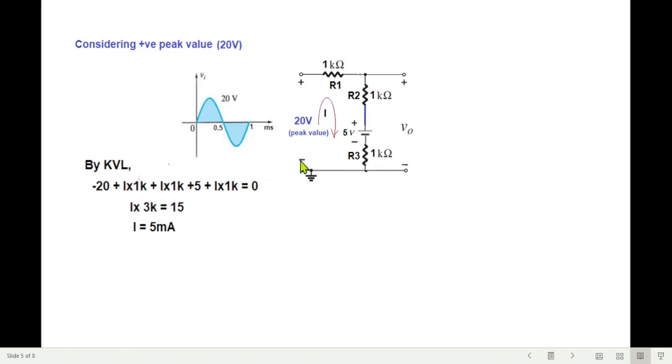Current, so by KVL we start from here minus 20 then i1 into 1k, i1 into 1k then is the plus 5 and then i1 into 1k. So from here i is 5 milliampere. Now that we have found i we need to find the voltage drop here and the voltage drop here so the total of all three will be our v output. So let's find v R2 is the voltage drop here, this current multiplied by resistance it will be 5 volt. Similarly v R3 drop here will also be 5 volt.